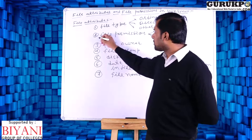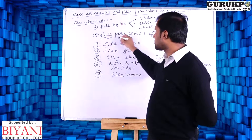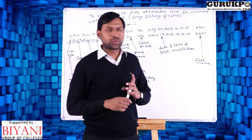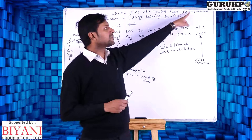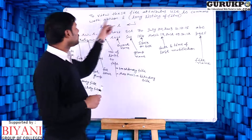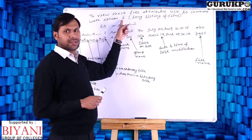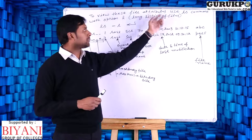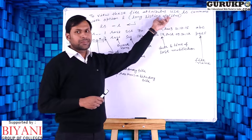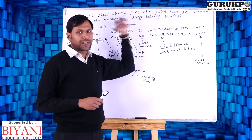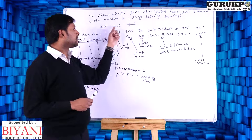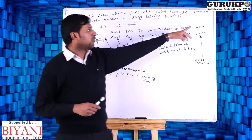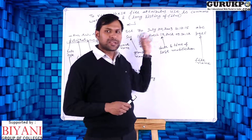Now we can discuss how we can change these file permissions. File attributes can be viewed by using the ls command with option -l. L stands for long listing of files, meaning with the file name we also get all file attributes. ls -l shows all files with their attributes.